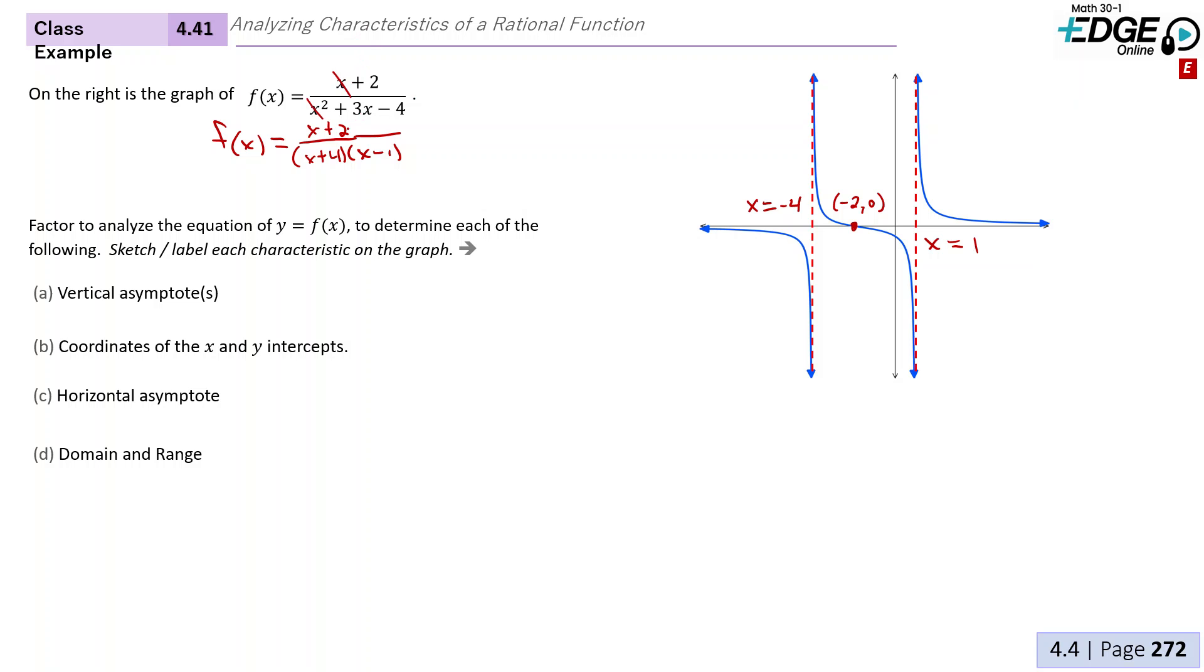We would really just end up with the constant terms in the end. So that would just be 2 over -4, or -1/2. So that wasn't too bad either. We have our y-intercept at (0, -1/2).